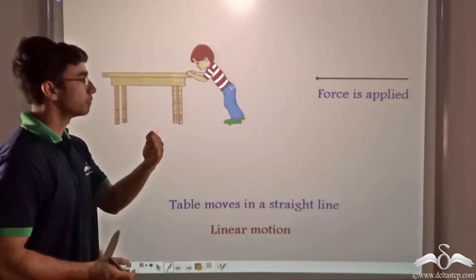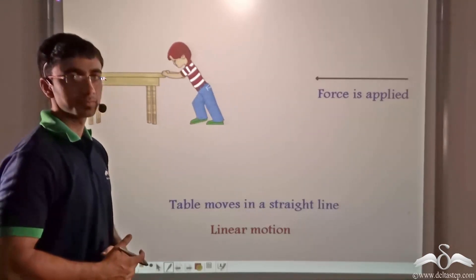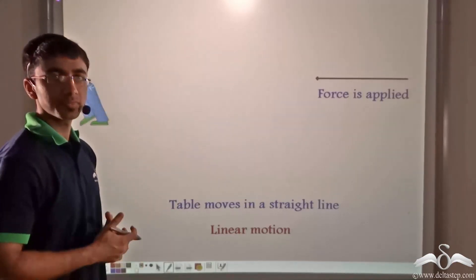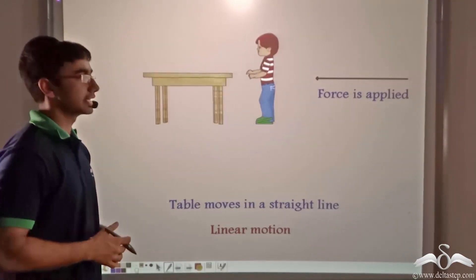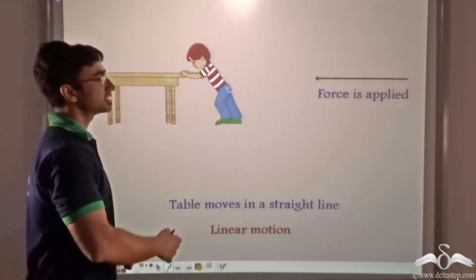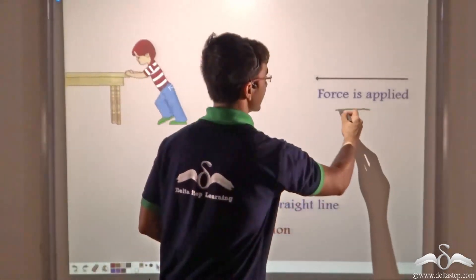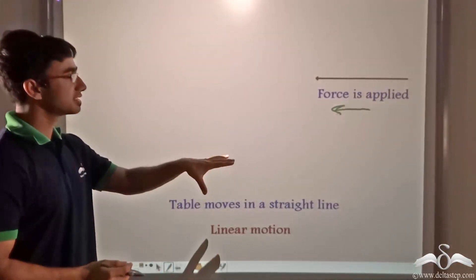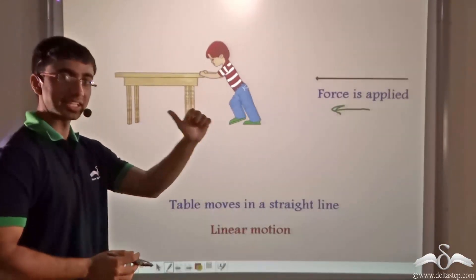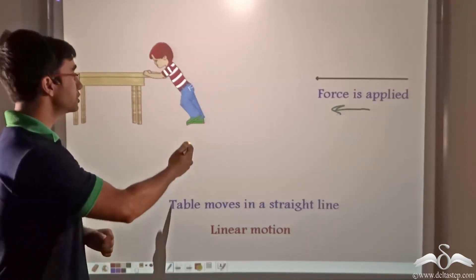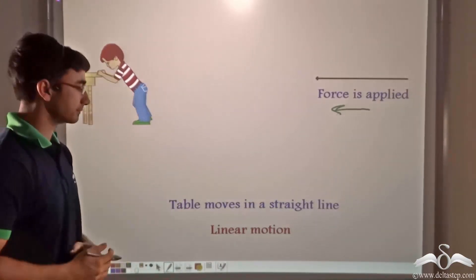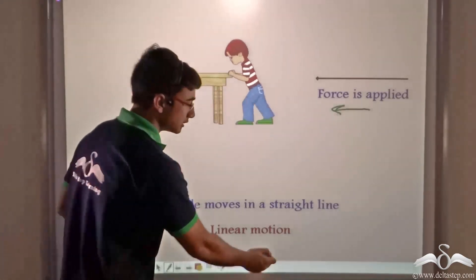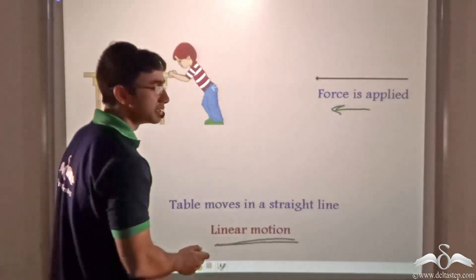Look at the animation playing on the screen. A boy is pushing the table and carrying it in the forward direction. The direction in which force is being applied has been marked out. When force is applied in this direction, the boy is able to move the table in a straight line. Since the table is moving in a straight line, this motion is known as linear motion.